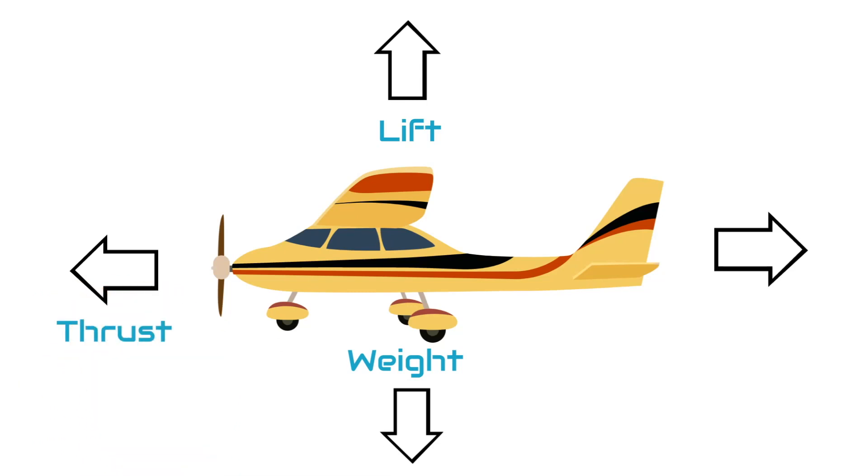Thrust is the force that moves an airplane forward. In our airplane, it's created by the engine. Drag is the force that opposes the airplane's forward motion, and it is caused by the resistance of the air.